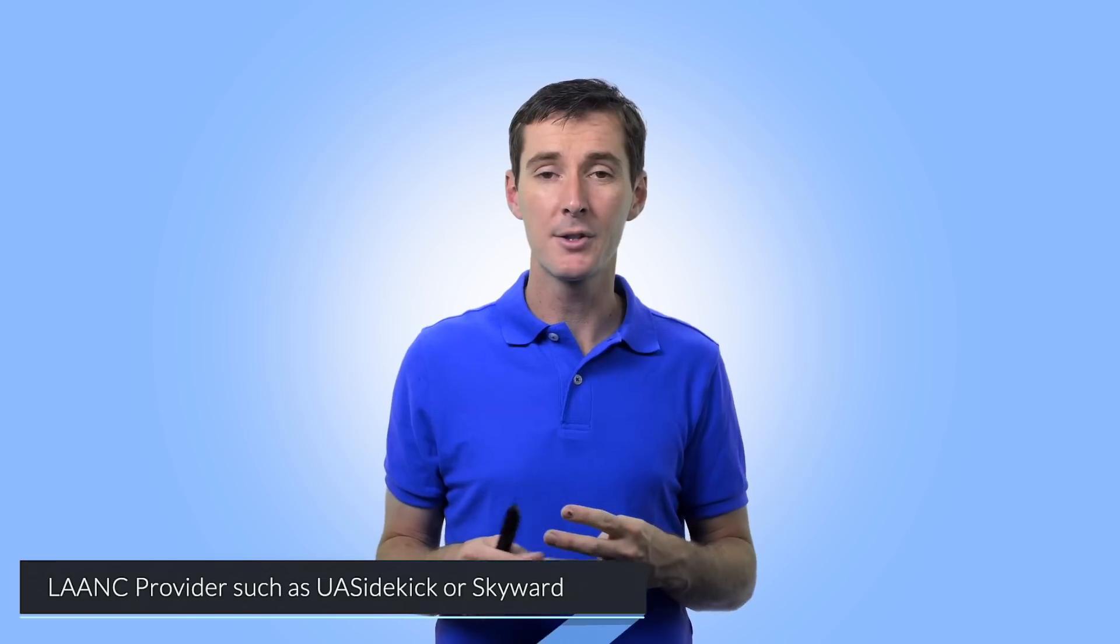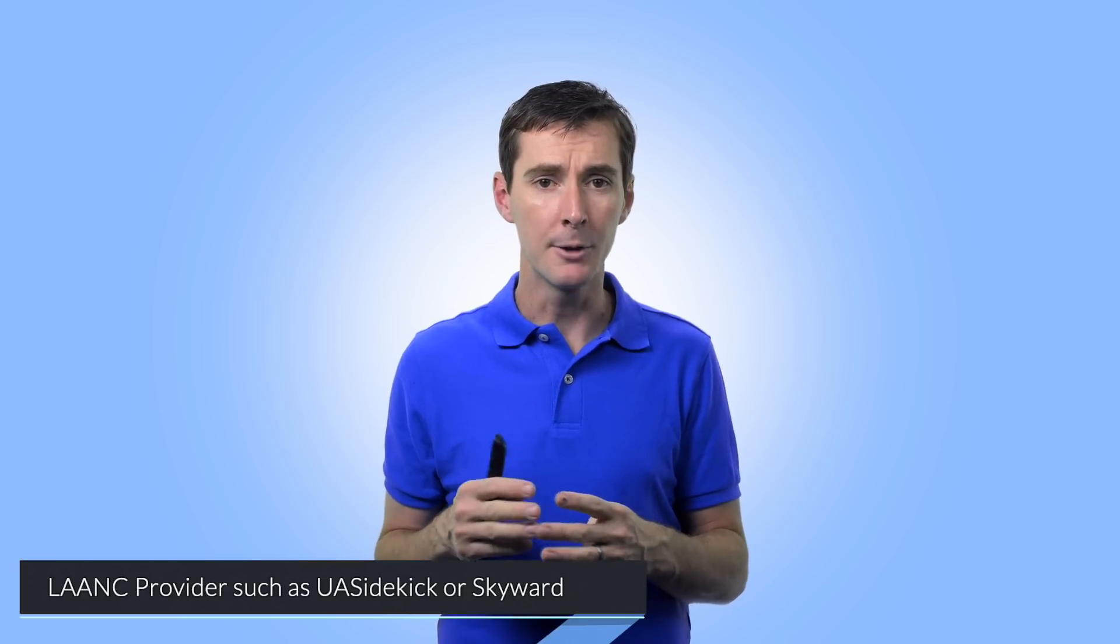Now, there's currently four different providers that I'm aware of that will do this for you. UAS Sidekick is one of them. That would probably be my preferred method at the moment, along with Skyward. Skyward is on your website. UAS Sidekick is an app on your phone. Then there's also Kitty Hawk and there's also AirMap. So you'll get to pick one of these providers and then you'll be able to submit, find the airspace.